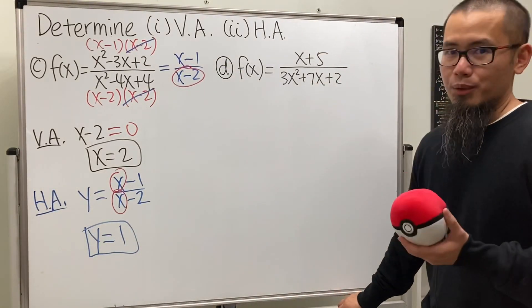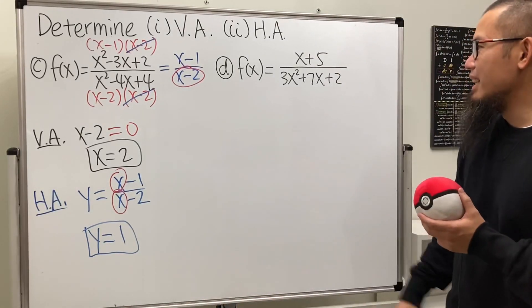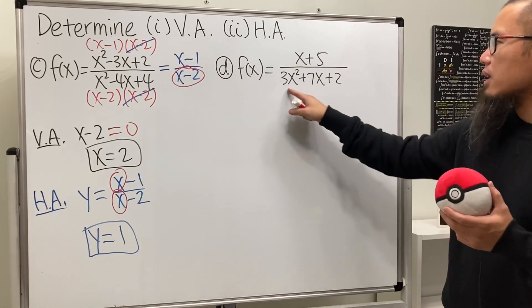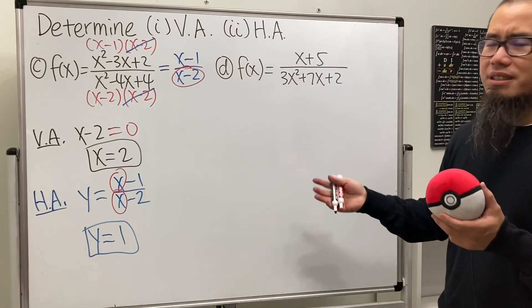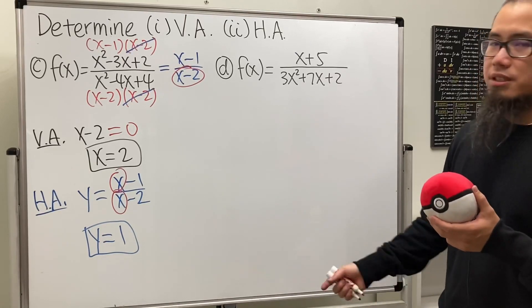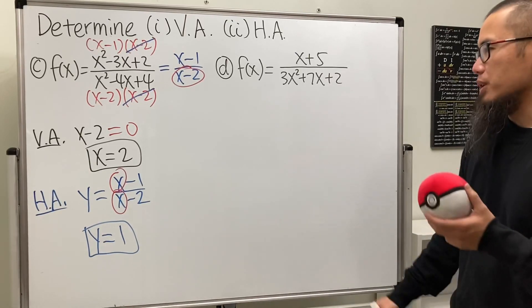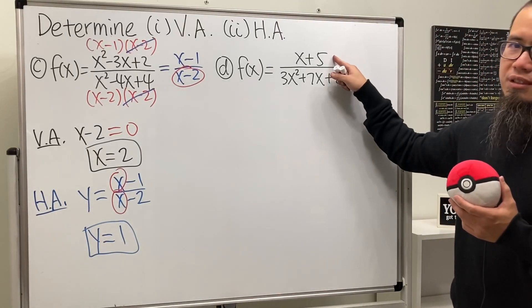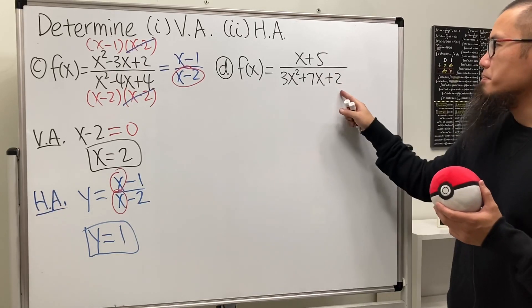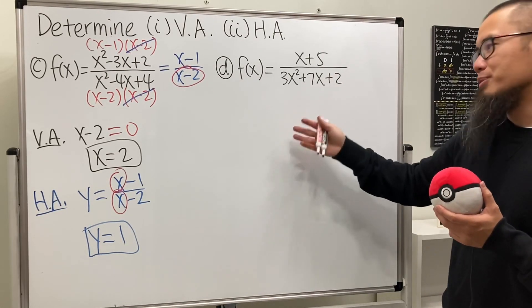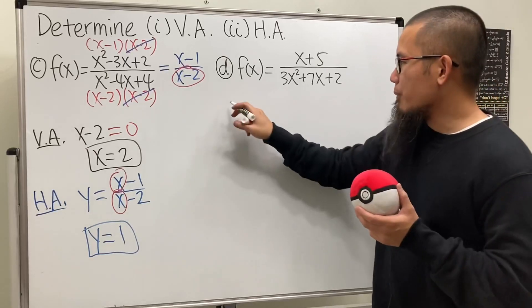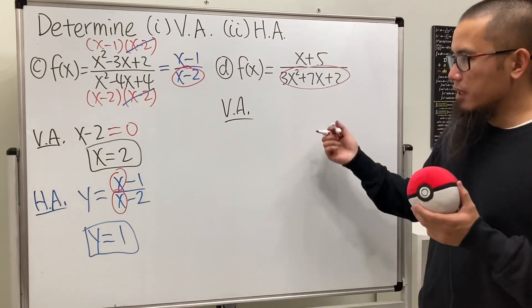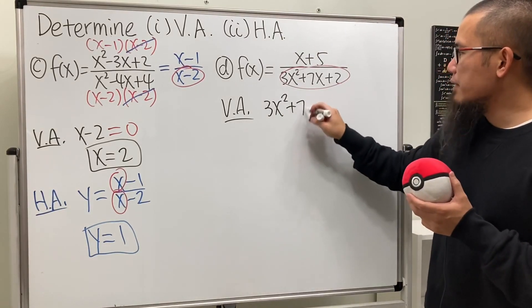For part (d), we cannot factor or cancel anything on the numerator or denominator, so there's nothing to reduce. We'll just work directly with this function.